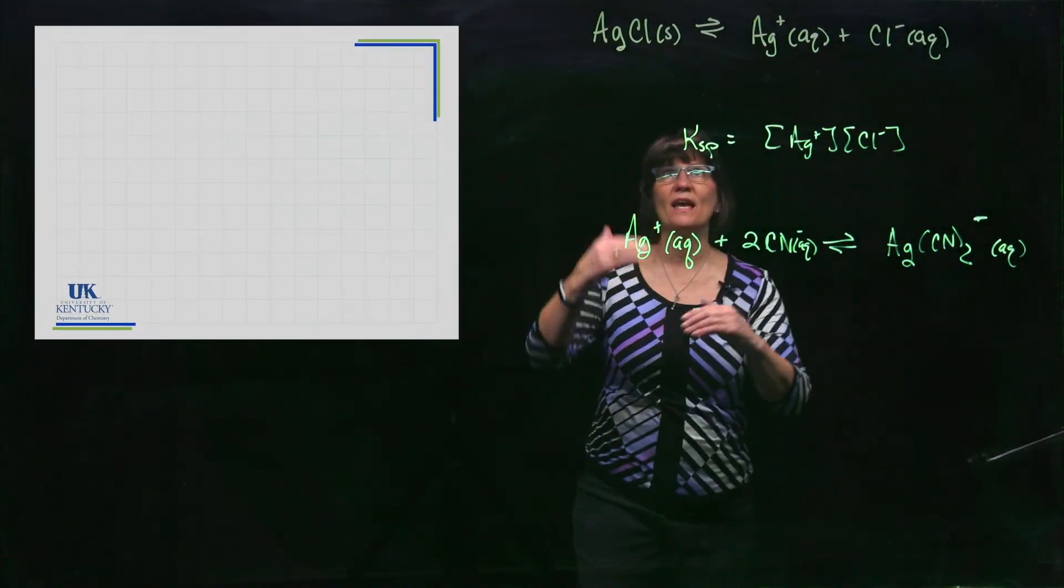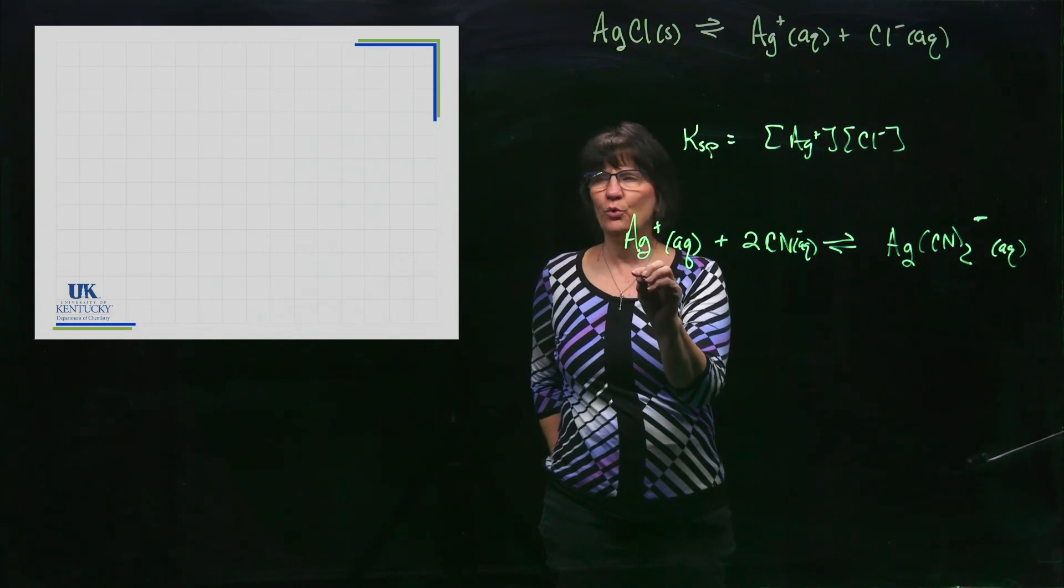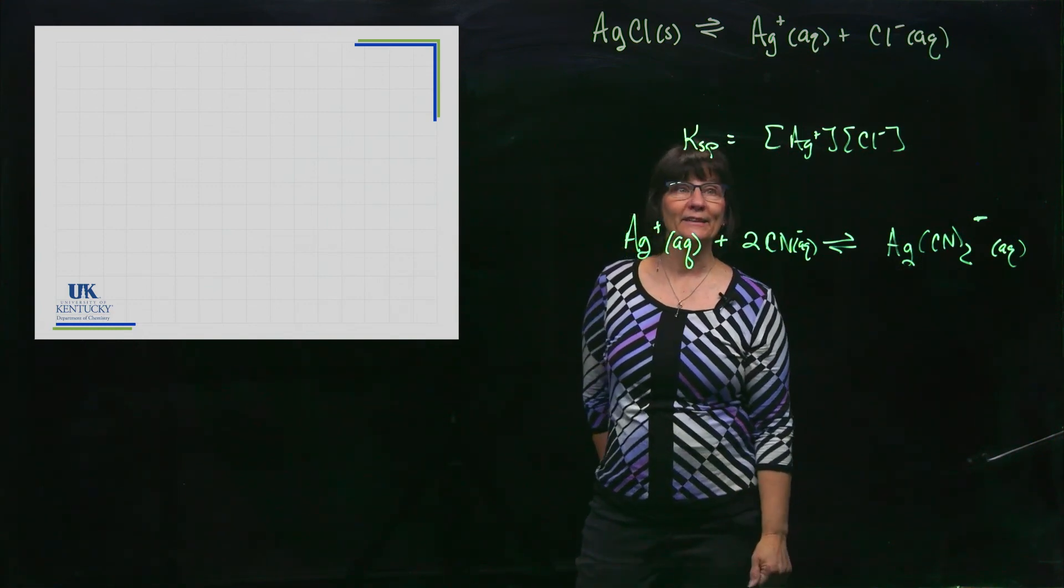All right, so that ends that lesson about how you can merge those two reactions together to cause something that's insoluble to become more soluble as you pull that ion out of solution by complexing it up with the ligand.